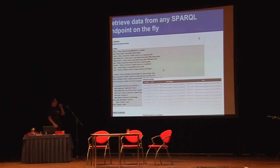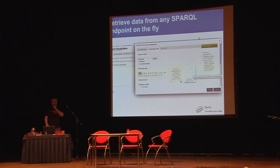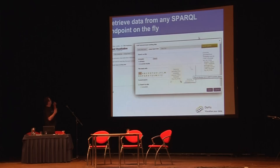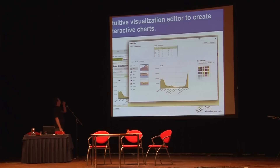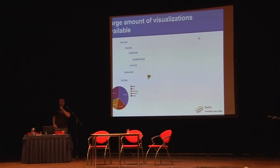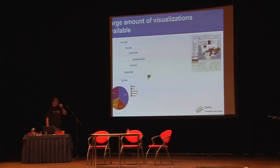You can use any SPARQL endpoint and retrieve data on the fly — here's how it looks: a SPARQL endpoint with a data preview, and I used the Data AI Relations tool for this visualization. It has an intuitive visualization editor to create charts and supports a large amount of visualizations: area chart, bar chart, combo chart, candlesticks, geochart, scatter chart, pie chart, and all the Google Charts that Google provides with its API.